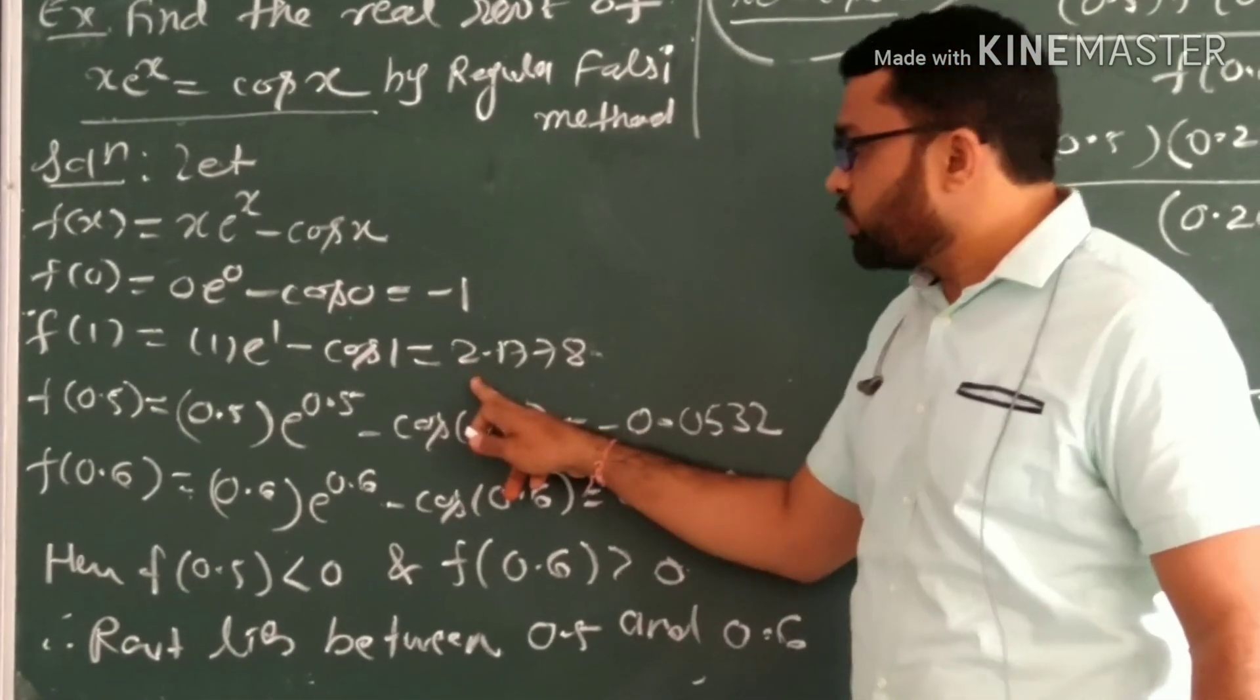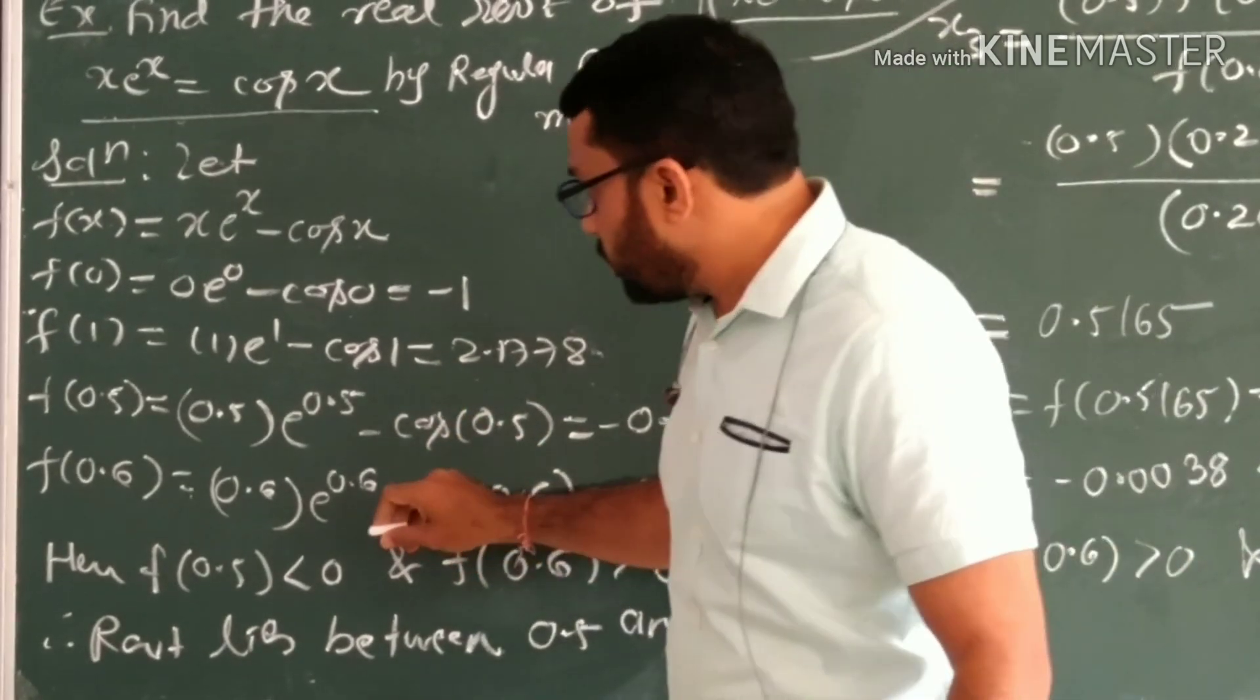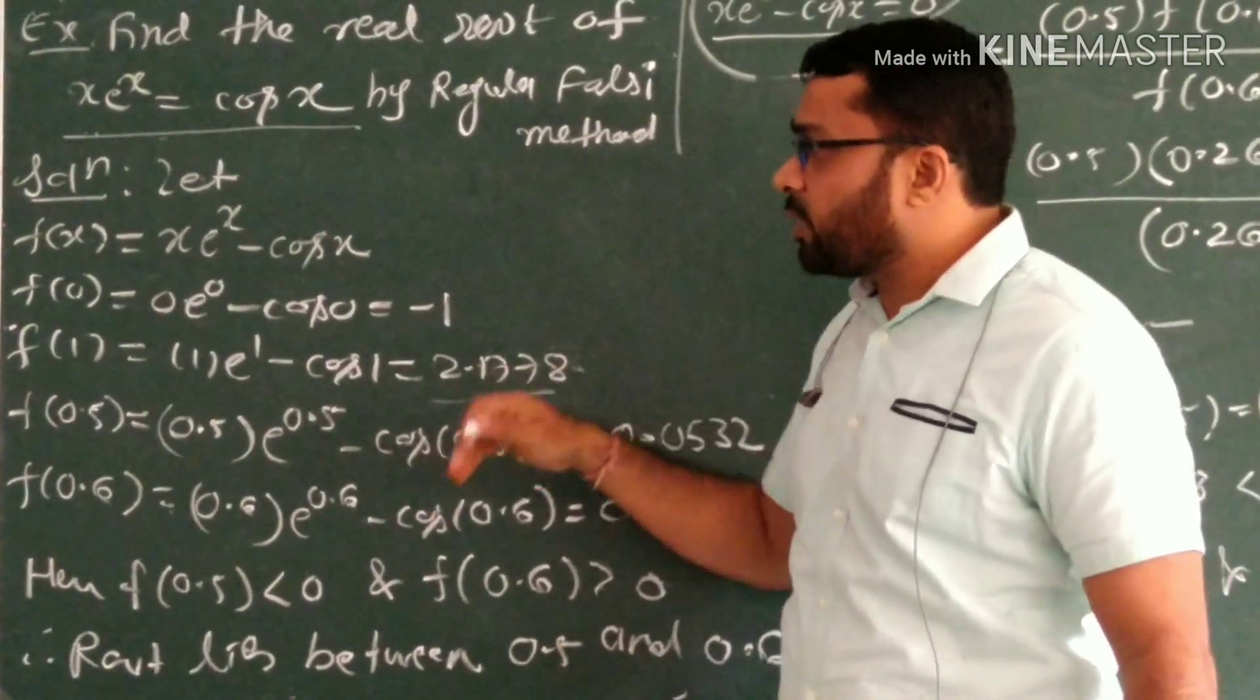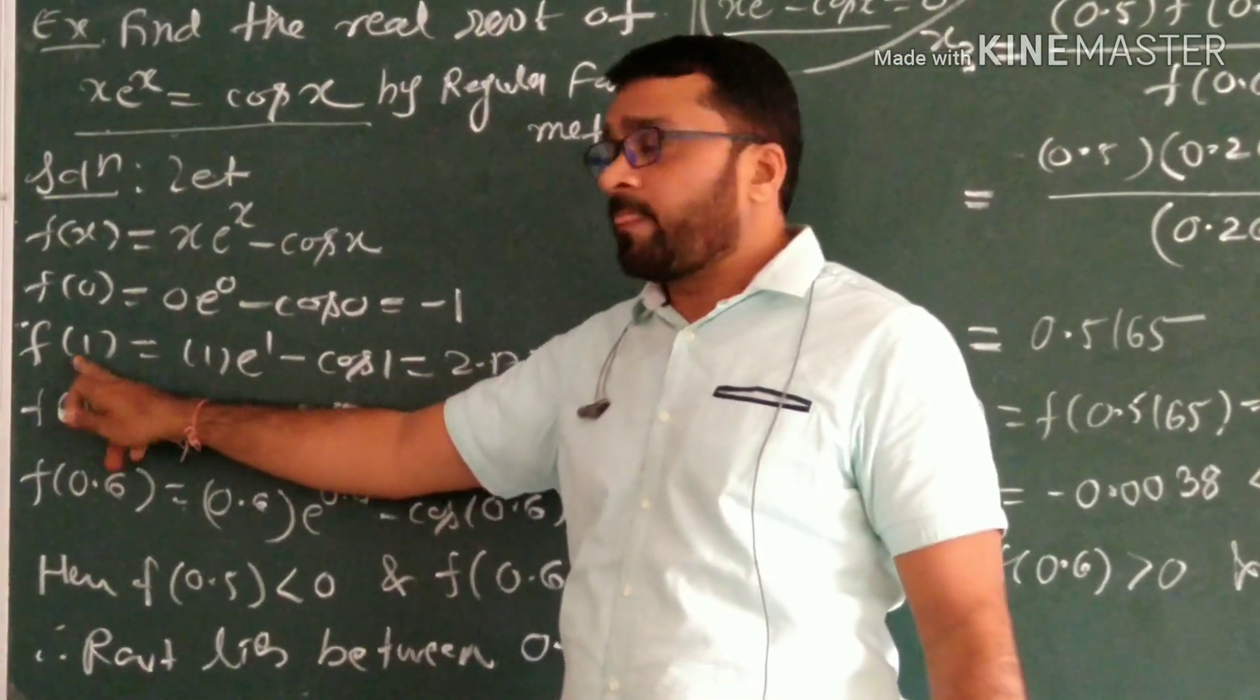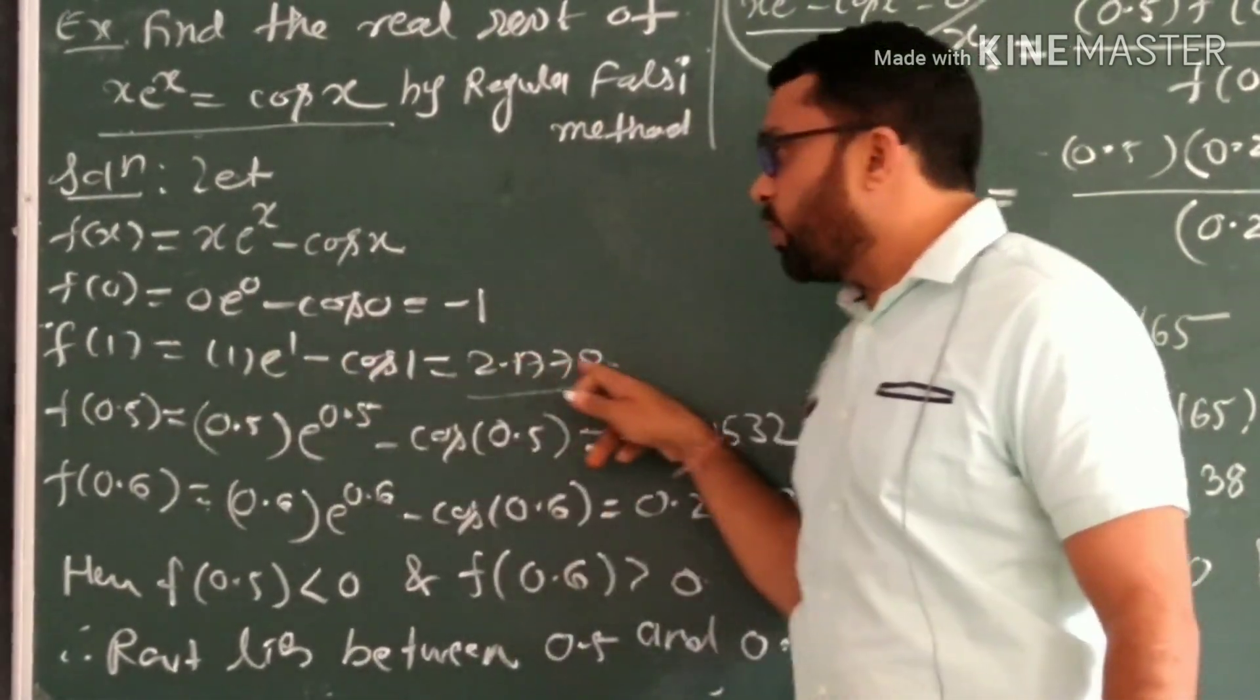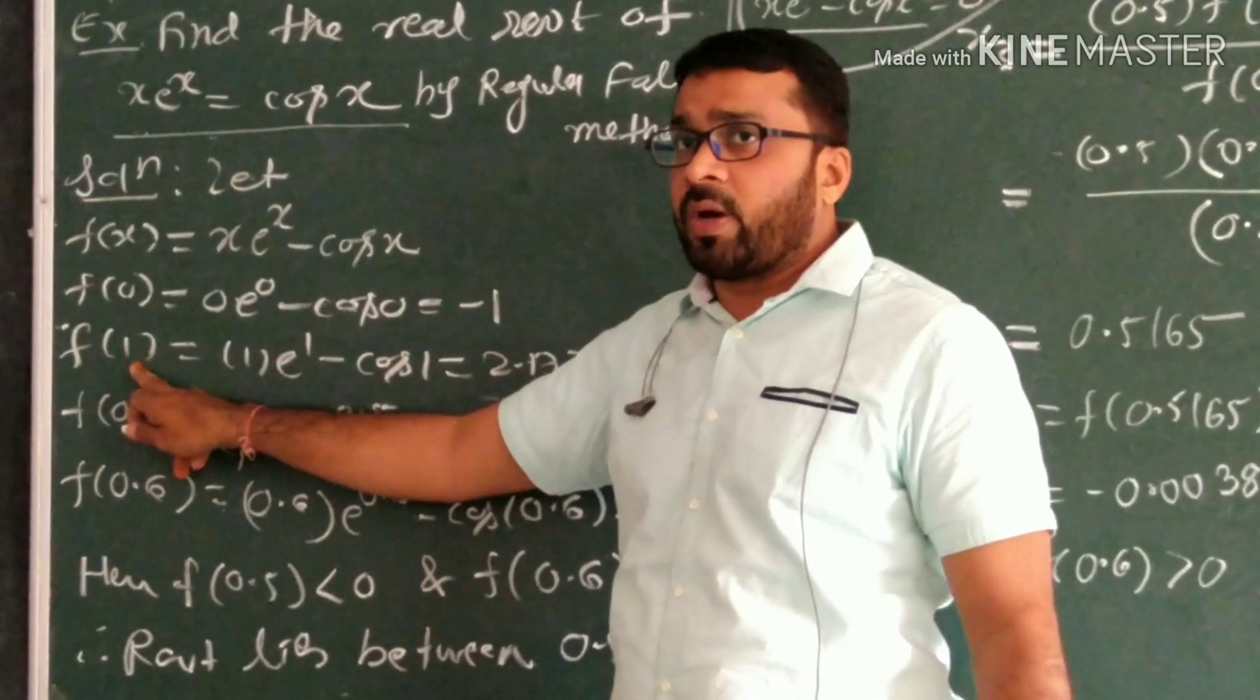This is negative, this is positive. f(0) is negative, f(1) is positive. Therefore we can say that the root lies between 0 and 1. Function value at 0 is negative, function value at 1 is positive, therefore the root lies between 0 and 1.